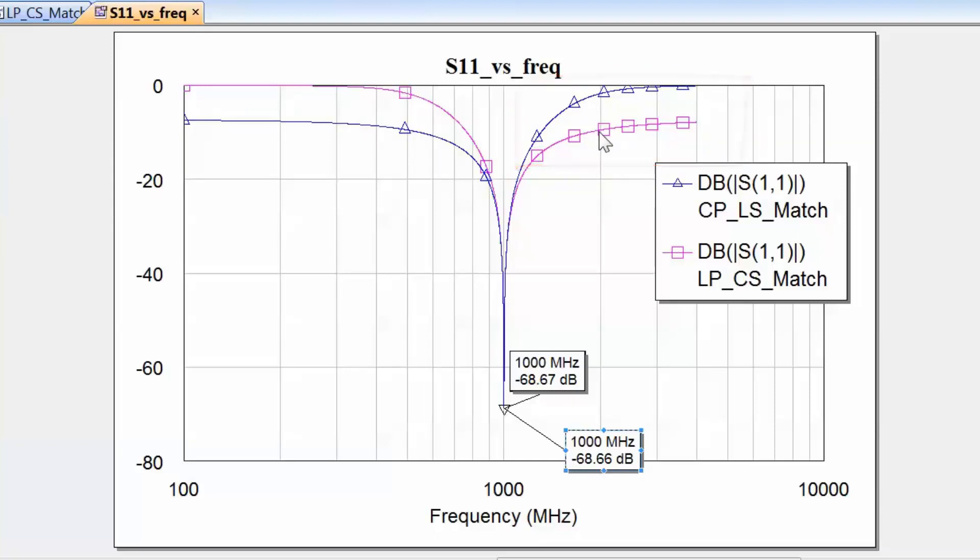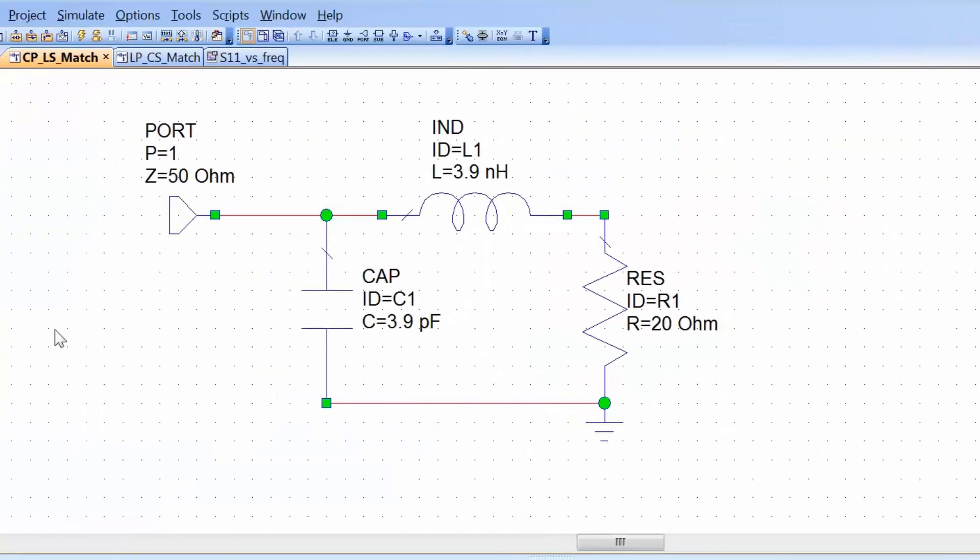So there is somewhat a difference between the two networks in the way the S11 versus frequency behaves. What is more interesting to see however is the actual frequency response of the networks across the frequency band. We want to see what kind of pass bands we can expect from our different matching networks. So let's go back to our schematics. We'll start with the CPLS matching network first. What we want to do here is to work out a frequency response for this LC combination that we've got here. And there is quite an easy way to do this.